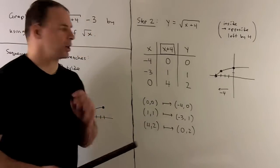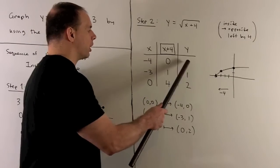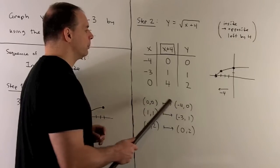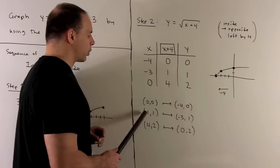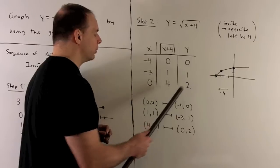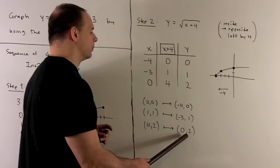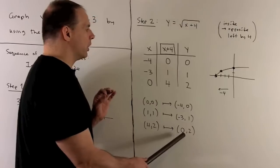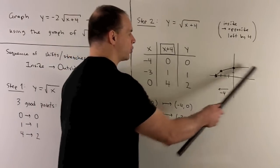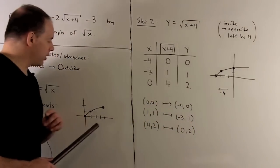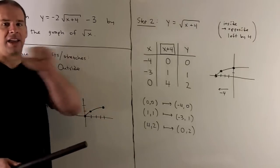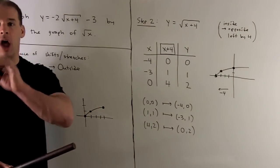So our new points are going to be minus 4,0. That's where 0,0 goes to. Minus 3,1. That's where 1,1 goes to. And then 0,2. That's where 4,2 goes to. If you sketch these points, what do you know? We're going to have this graph here. And that's just taking our original graph, sliding it to the left by 4 along x.